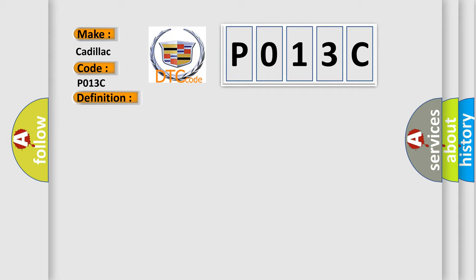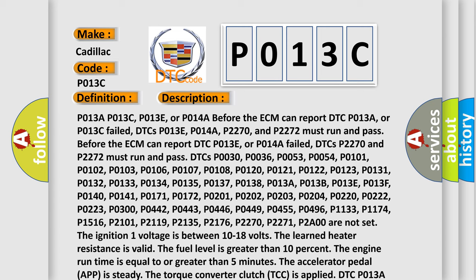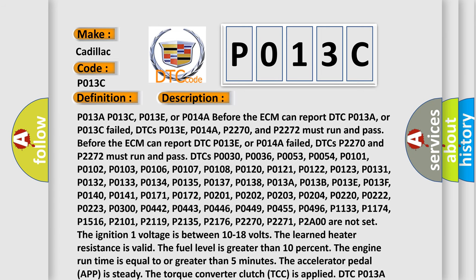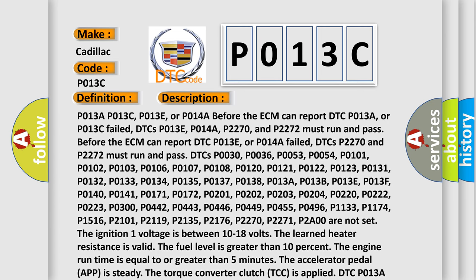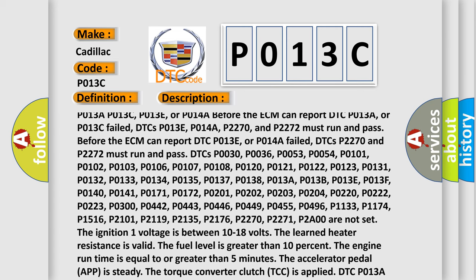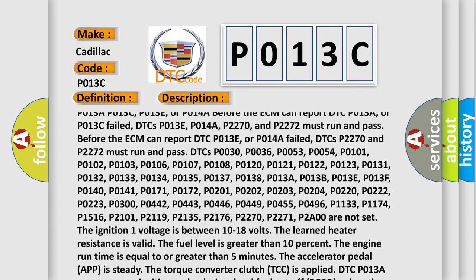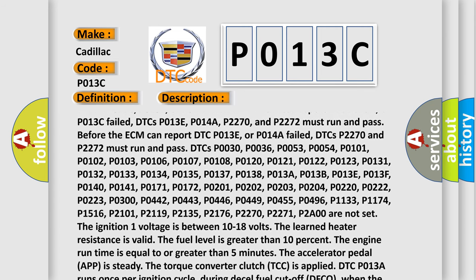And now this is a short description of this DTC code. P013A, P013C, P013E, or P014A: before the ECM can report DTC P013A or P013C failed, DTCs P013E, P014A, P2270, and P2272 must run and pass. Before the ECM can report DTC P013E or P014A failed, DTCs P2270 and P2272 must run and pass.